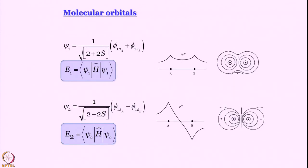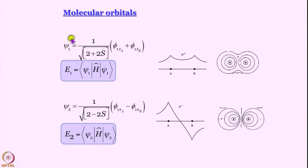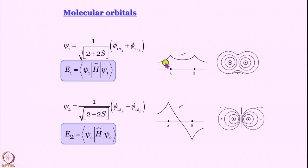We identified something called an overlap integral — integral of 1s_a times 1s_b over all space. We have two wave functions: psi_1, the bonding orbital, is 1 over root(2 + 2S) multiplied by (1s_a + 1s_b), and psi_2 is 1 over root(2 − 2S) multiplied by (1s_a − 1s_b). We have plotted the electron distribution as contour diagrams and profiles.